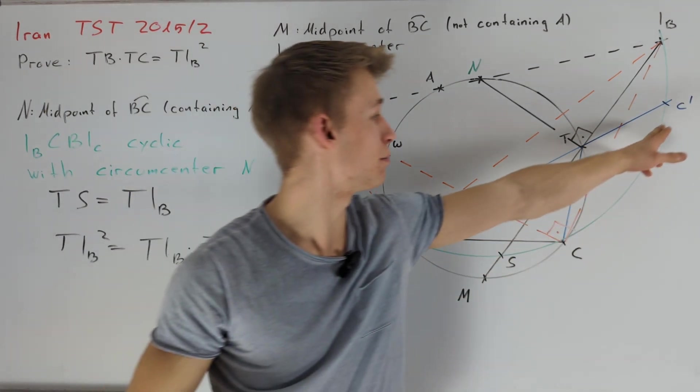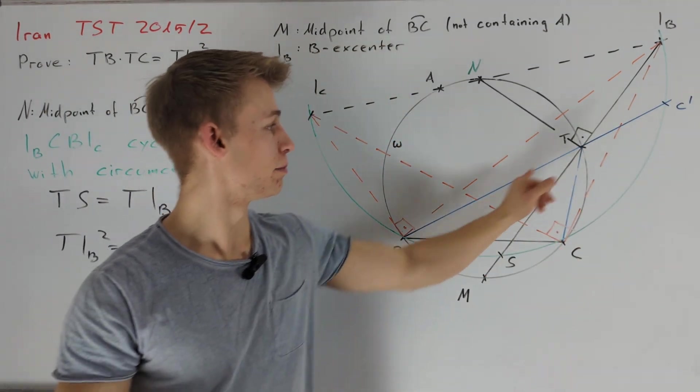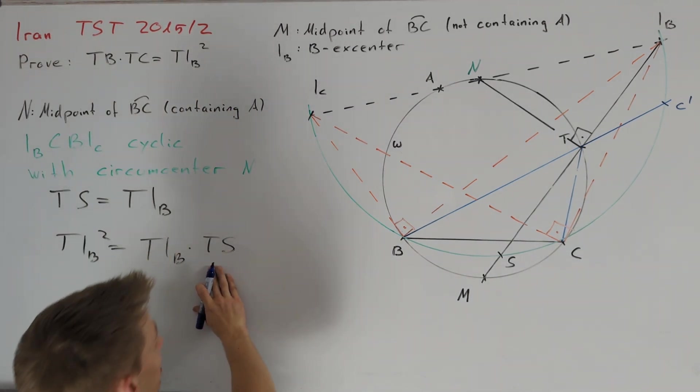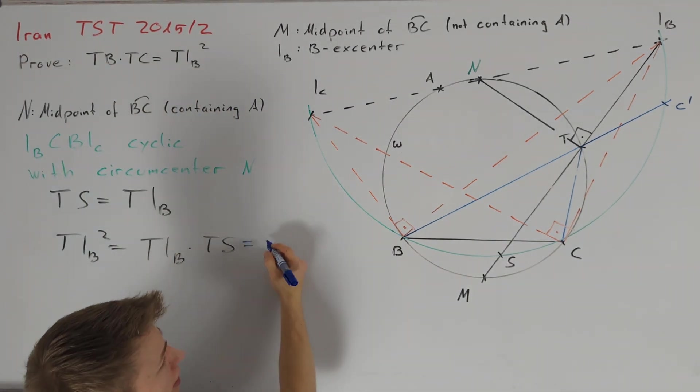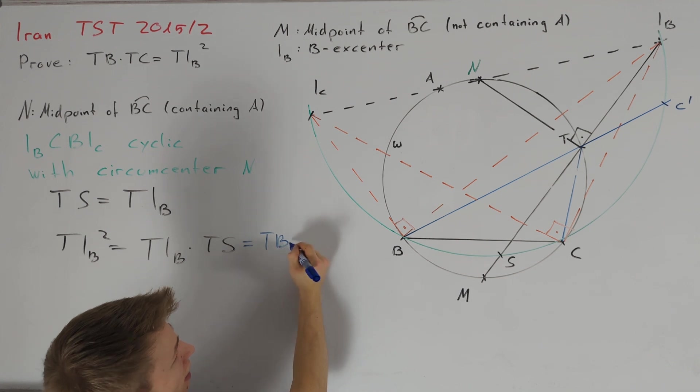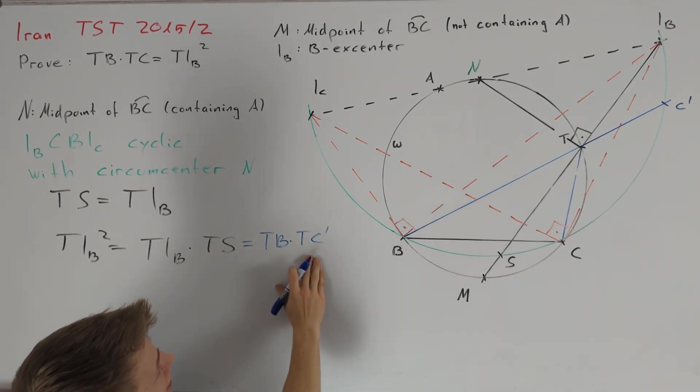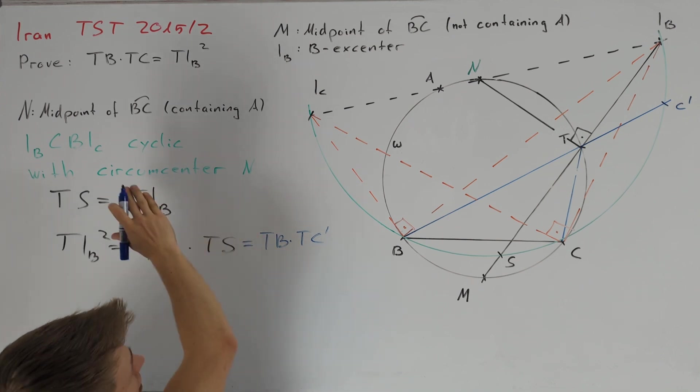We define C prime to be the intersection of BT and the green circle and thus we get that TIB times TS is equal to TB times TC prime and therefore it's enough to prove that TC prime is equal to TC.